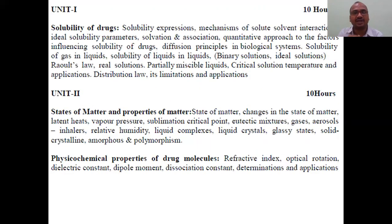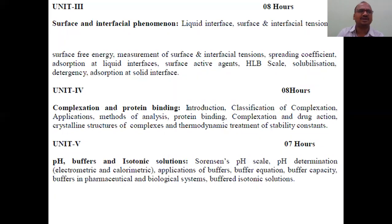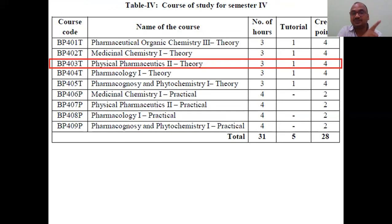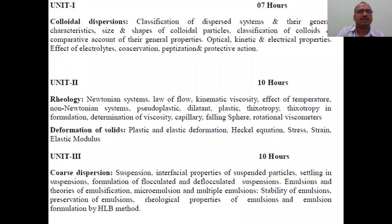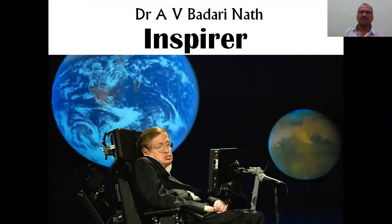The syllabus for Physical Pharmaceutics 1 covers solubility, states of matter, physical properties of drug molecules (refractive index, optical rotation, dielectric constant, dipole moment, surface tension, interfacial tension), protein binding, pH buffers, and isotonic solutions — five units. Physical Pharmaceutics 2 covers colloidal dispersions, rheology, deformation of solids, coarse dispersions, micromeretics, particle size determination, and stability — another five units. Videos for all topics will be uploaded in the playlist.